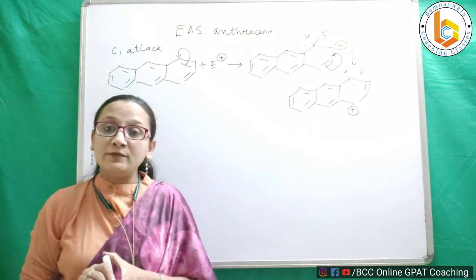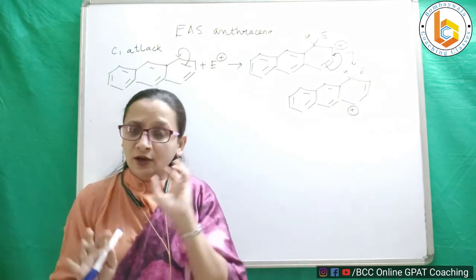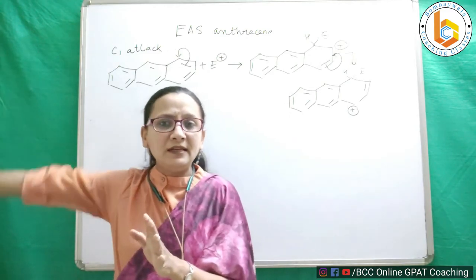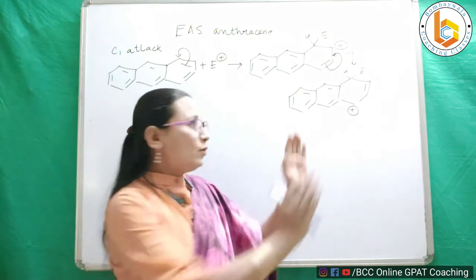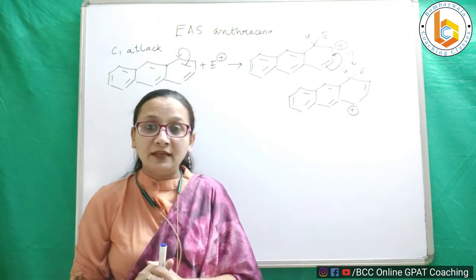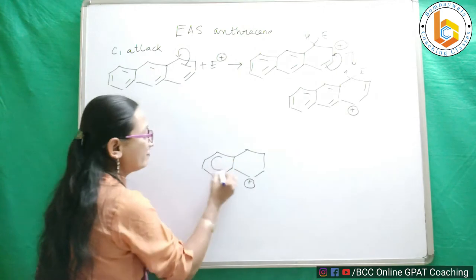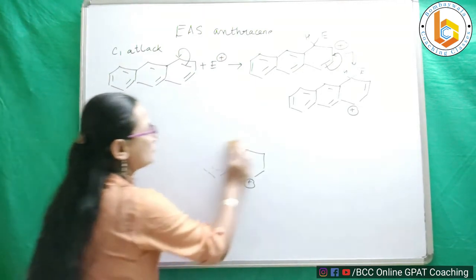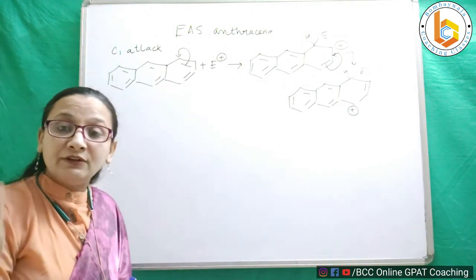As we explained for naphthalene, if there is a disturbance or a charge in one ring, the adjacent benzene ring is completely aromatic and stable — it will not unnecessarily participate. That ring remains aloof. Just as in naphthalene the site benzene ring remained aloof when the positive charge was in the other ring, here the naphthalene ring remains aloof. So attack at position 1 gives us two resonating forms.